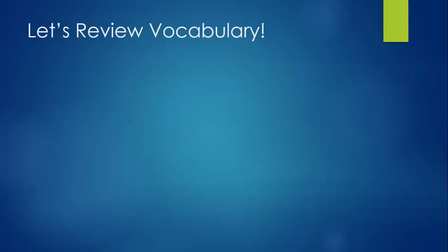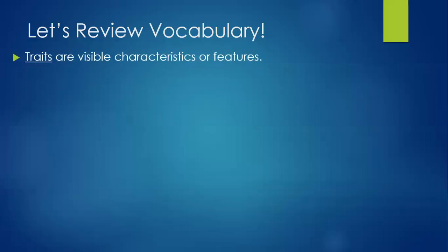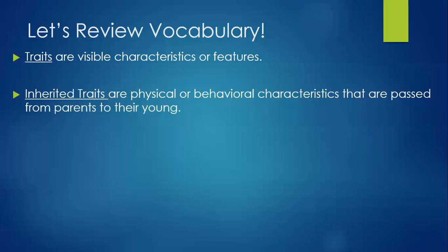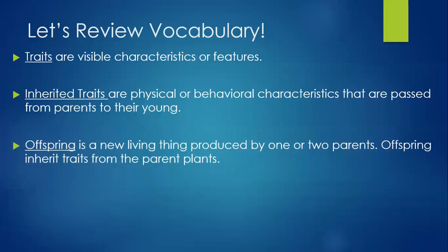Now let's review vocabulary. Traits are visible characteristics or features. Inherited traits are the physical or behavioral characteristics that are passed from parents to their young. Offspring is a new living thing that is produced by one or two parents. Offspring inherit traits from the parent plants. And keep in mind, genes are the factors that control these traits.